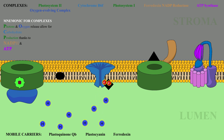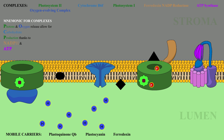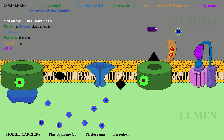Plastocyanin now picks up the two electrons and transfers them to Photosystem I. The electrons receive an additional energy boost with the help of two additional photons and get transferred onto the last mobile carrier, Ferredoxin. Ferredoxin then transports the electrons to Ferredoxin NADP reductase, which uses the two electrons plus a proton from the stroma to convert NADP+ to the higher energy molecule NADPH.